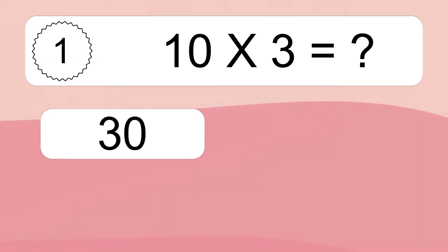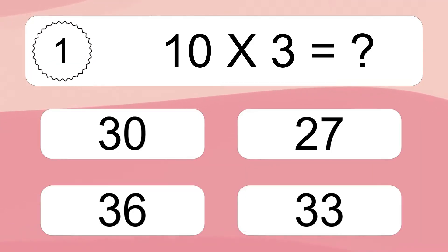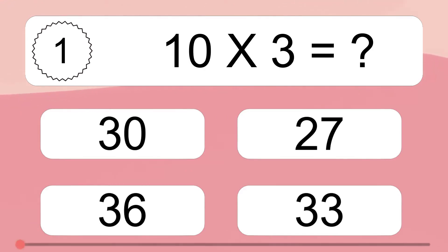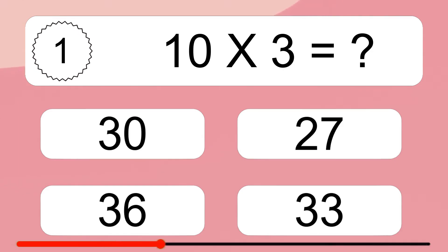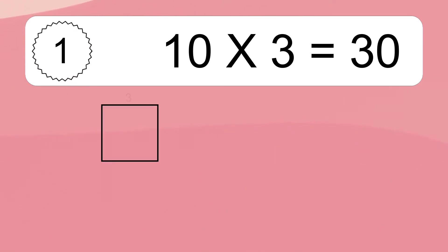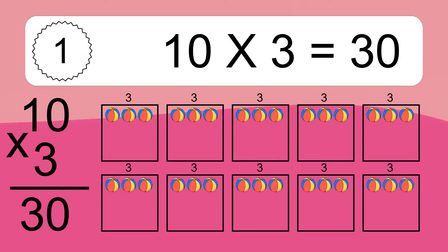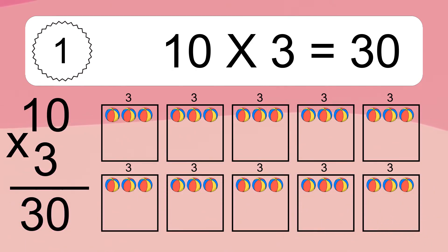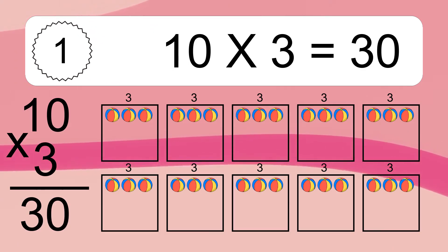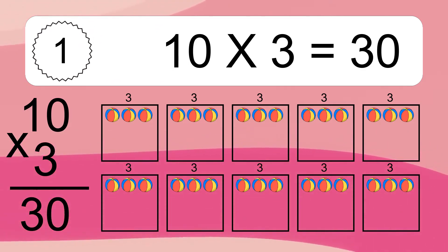10 times 3 equals what? 10 times 3 equals 30. We have 10 boxes and each box has 3 colorful balls inside. If you count all the balls in all the boxes together, you will have 10 times 3 balls. This equals 30 balls.